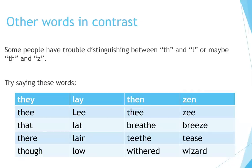Other words in contrast. Some people have trouble distinguishing between TH and L, or maybe TH and Z. Try saying these words: they / lay, the / lee, that / lat, there / lair, though / lo, then / zen, the / z, breathe / breeze, teeth / tease, withered / wizard.